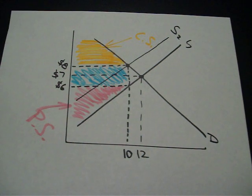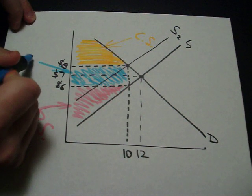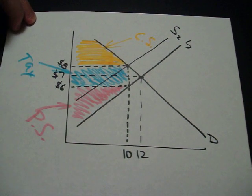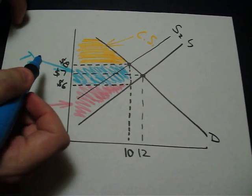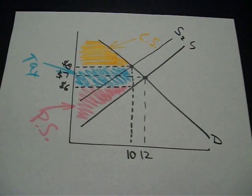Remember the blue area was the area of tax revenue collected by the government, so there's your tax. And if you were asked on an AP test to calculate that area of tax,